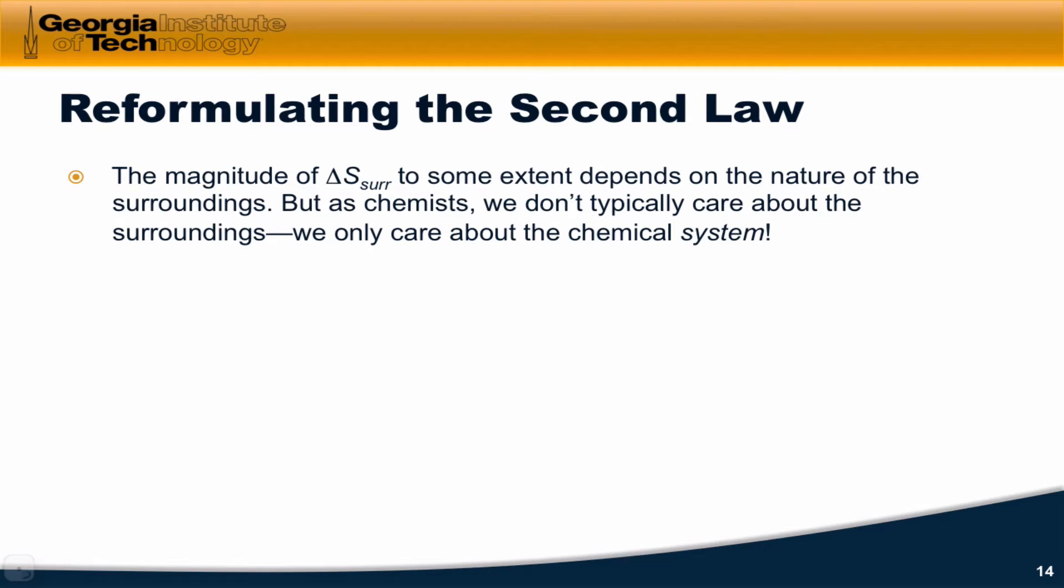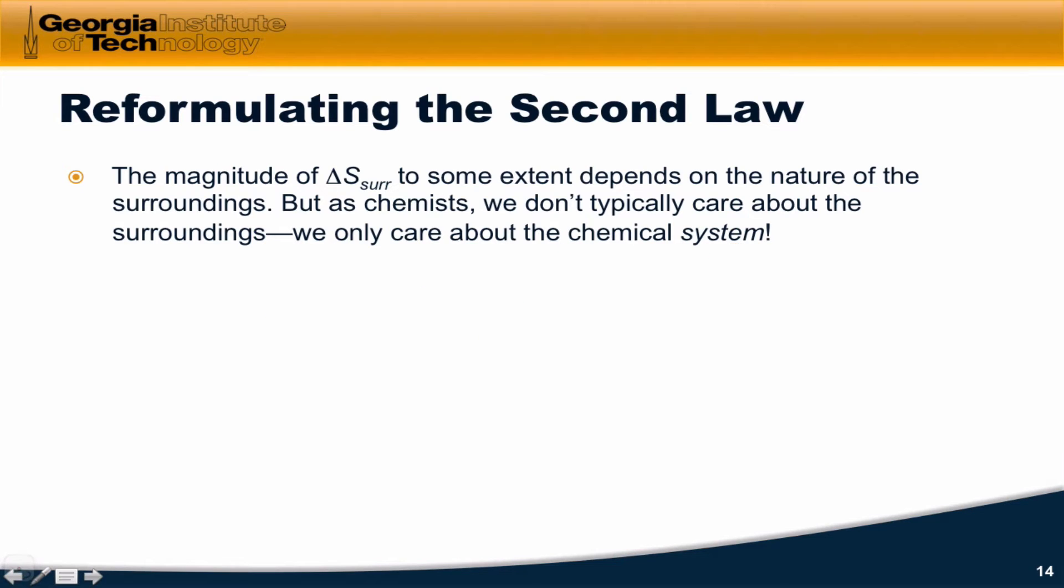The magnitude of delta S for the surroundings, to some extent, depends on the nature of the surroundings and the nature of the process. Delta S for the surroundings, according to the classical definition of entropy, is equal to the heat transferred to the surroundings divided by the temperature. But we don't usually care about the surroundings as chemists - we only care about the chemical system. So we want to reformulate the second law in terms of the system only.